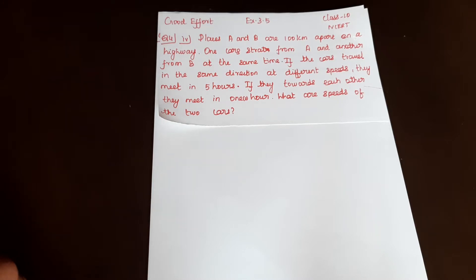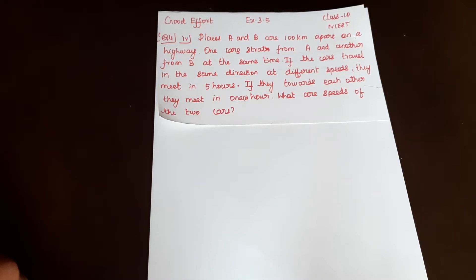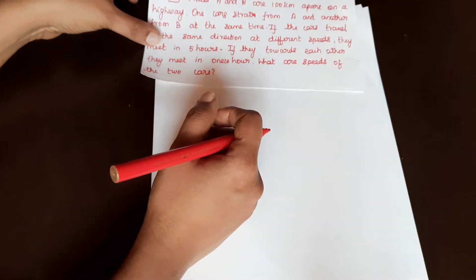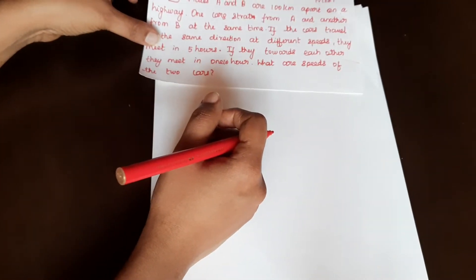Places A and B are 100 km apart on a highway. One car starts from A and another from B at the same time. If the cars travel in the same direction at different speeds, they meet in 5 hours. If they travel towards each other, they meet in 1 hour. What are the speeds of the 2 cars?